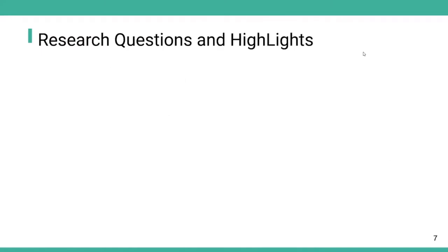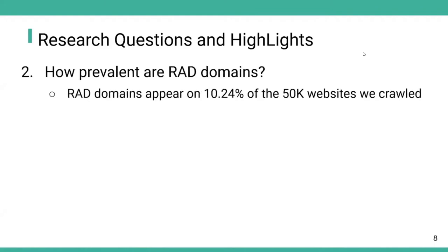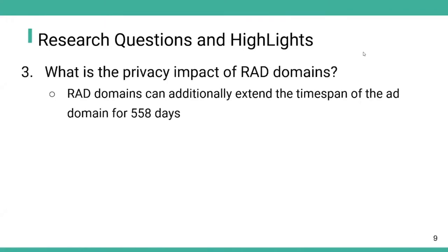We propose a few research questions and emphasize our research highlights. The first research question is: what are the common patterns of red domains? We propose methods for discovering red domains and present a taxonomy of common domain-changing patterns. We also investigate how prevalent red domains are — we discover red domains appear on 10.24% of the 50k websites we crawled. Finally, we measure the privacy impact: red domains can additionally extend the time span of the original ad domain by 558 days on average, which is about one and a half years.